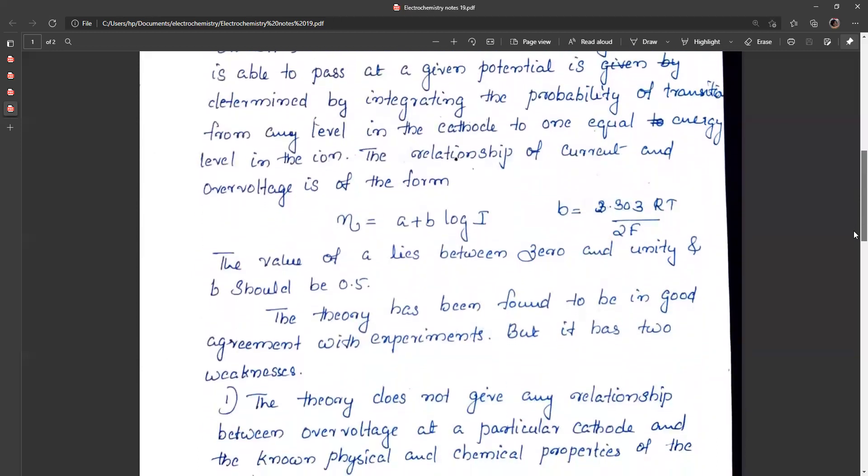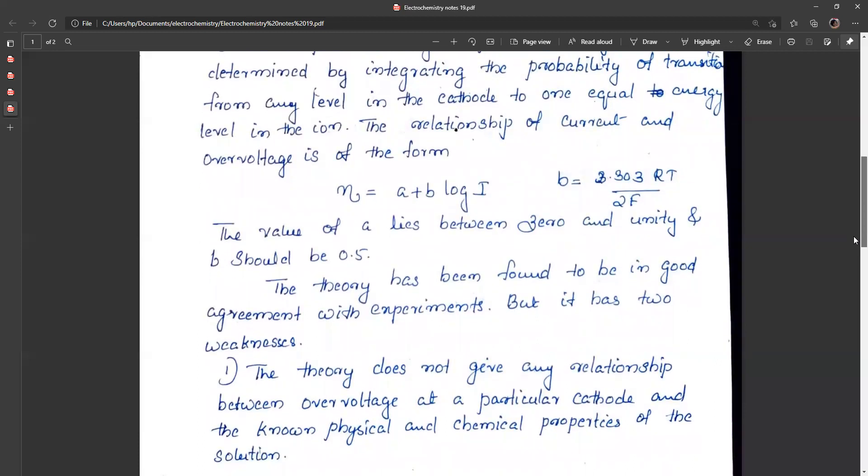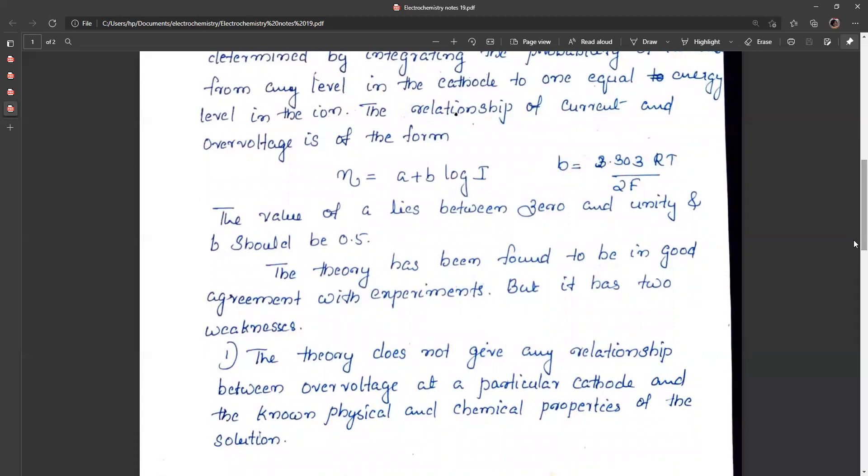The theory was found to be in good agreement with experiments, but it has two weaknesses. The theory does not give any relationship between overvoltage and a particular cathode and the known physical and chemical properties of the solution.